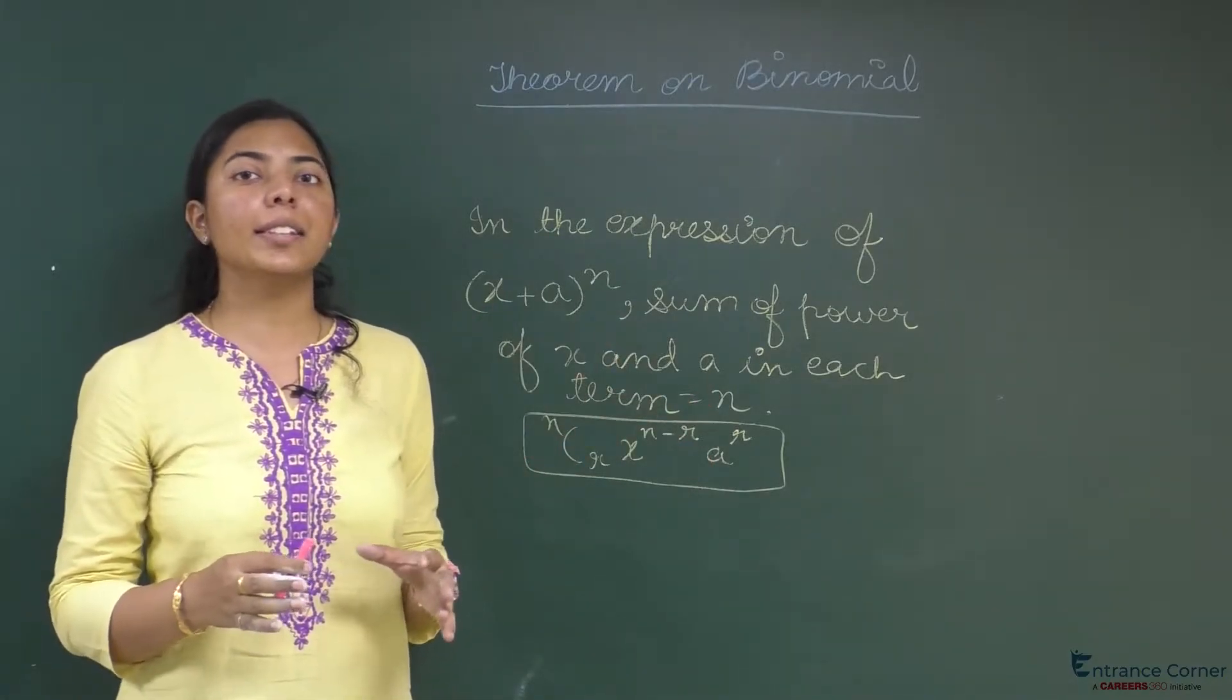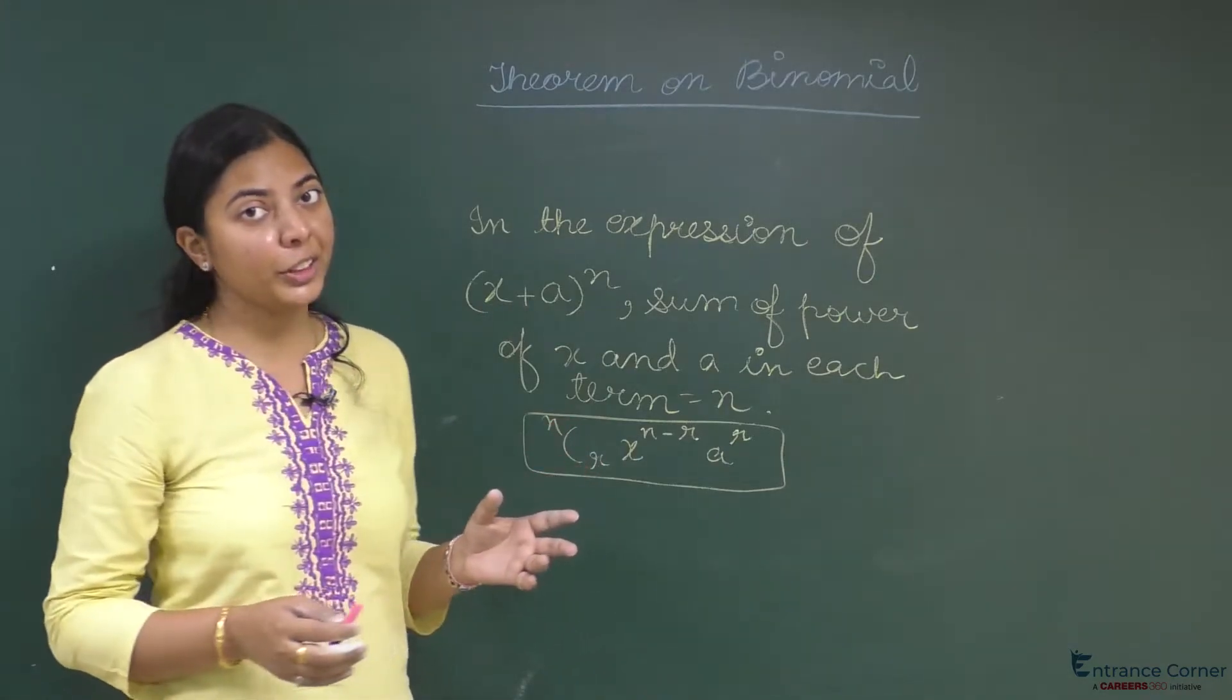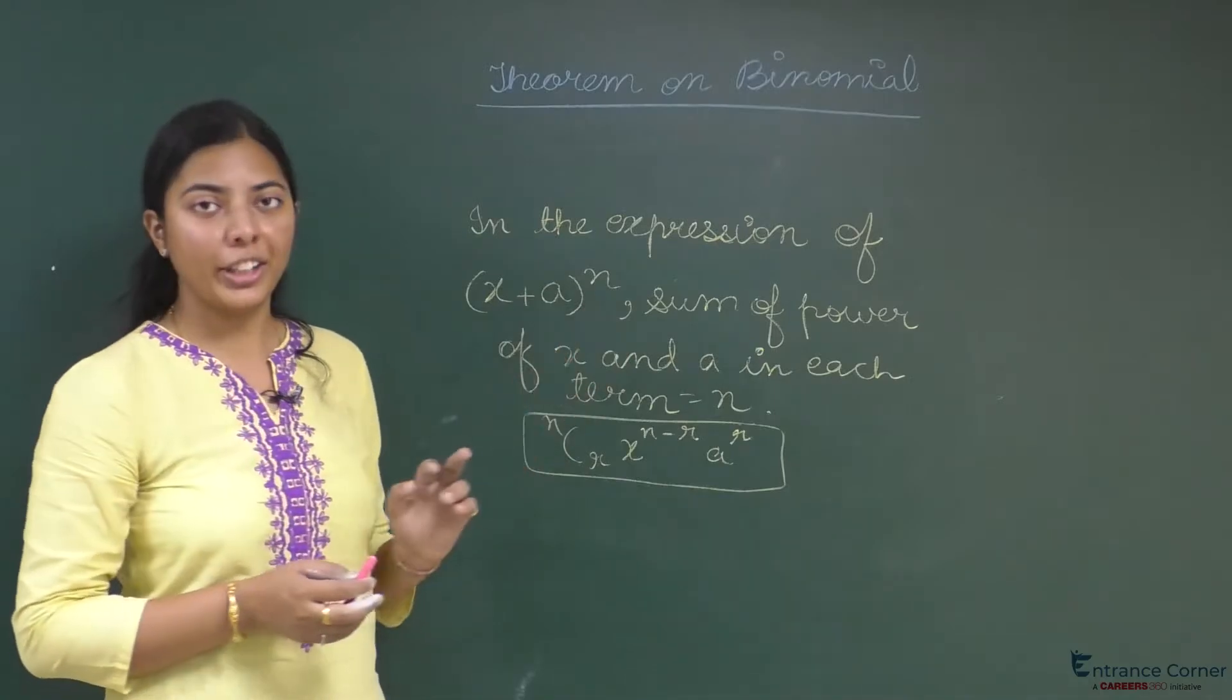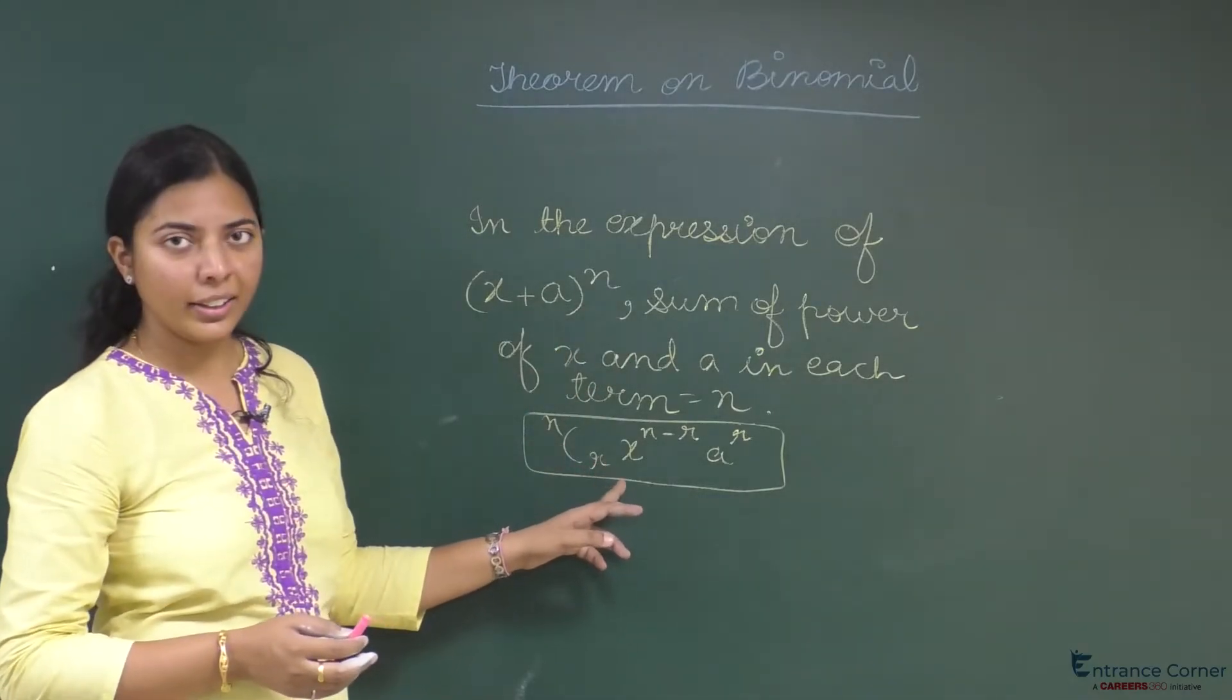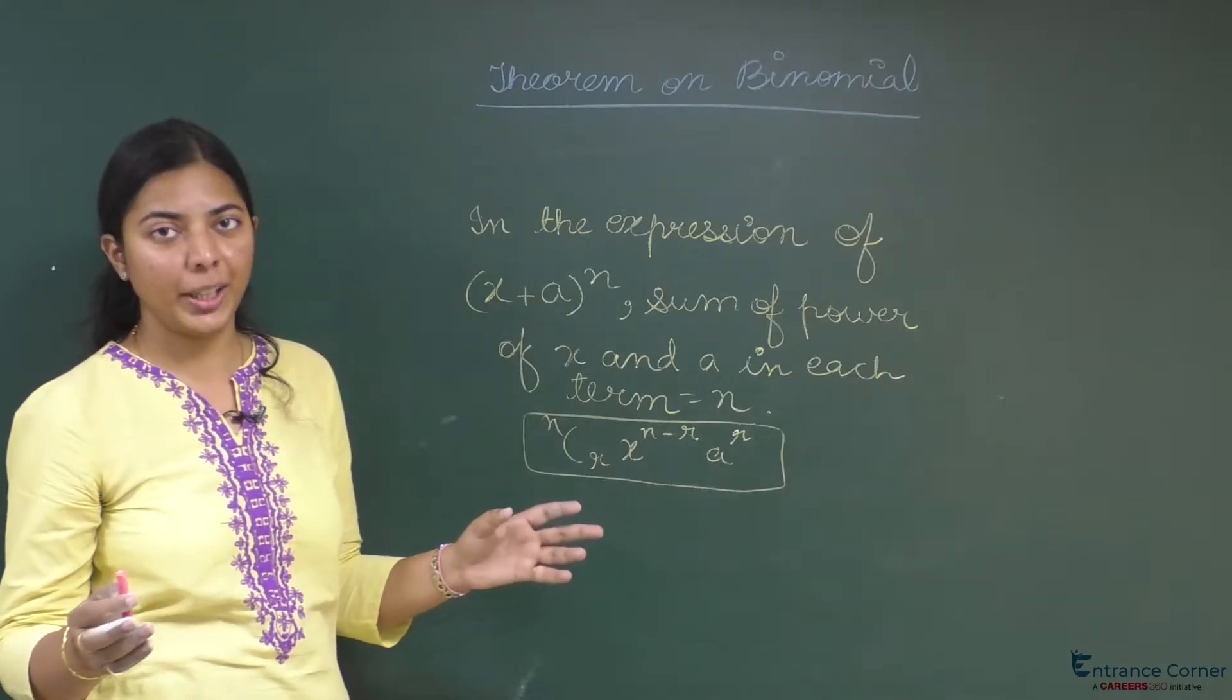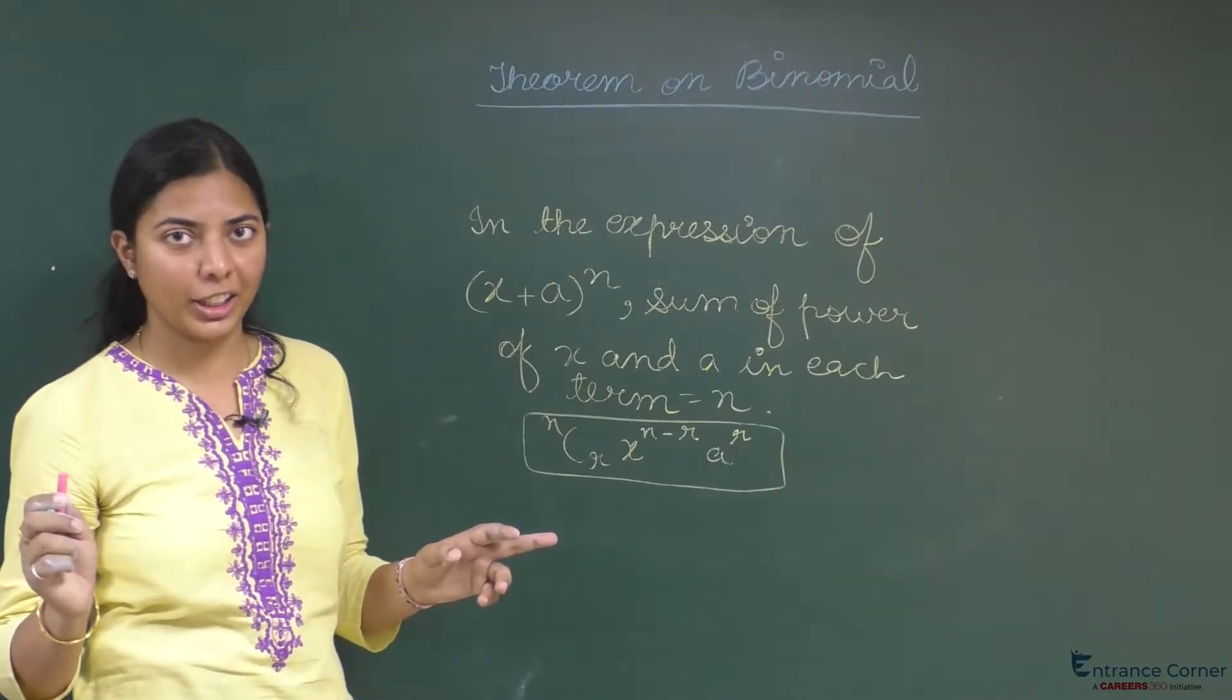I will show this by some general term. If I consider a general term in the binomial theorem expansion of x plus a to the power n, its general term can be written as nCr where r is any natural number. It will start its value from 0 actually, 0 and all natural numbers.